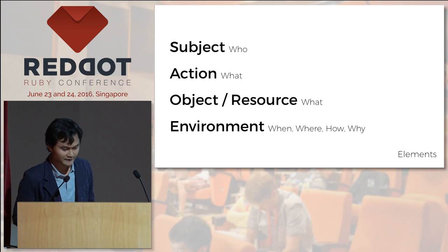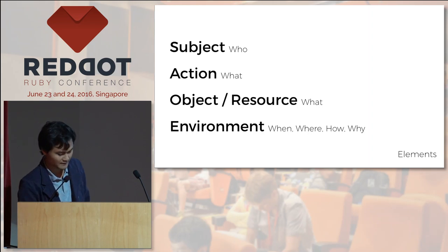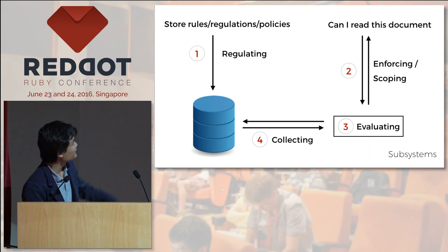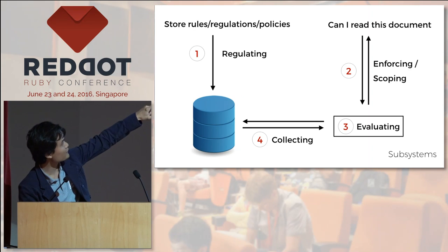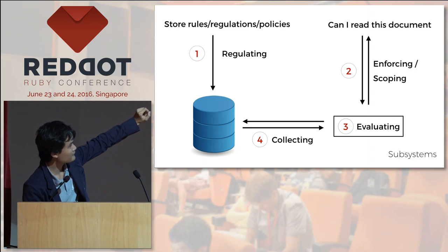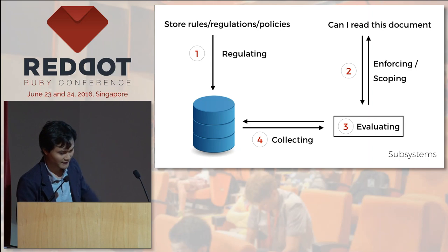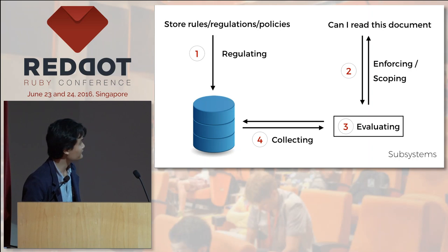We also have to understand the elements of authorization: subject, action, object, resource, and environment. So in the question 'can I read this document?' — 'I' is the subject, 'read' is the action, and 'this document' is the object or resource.